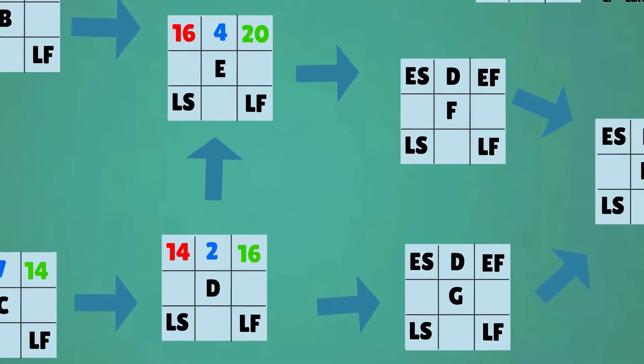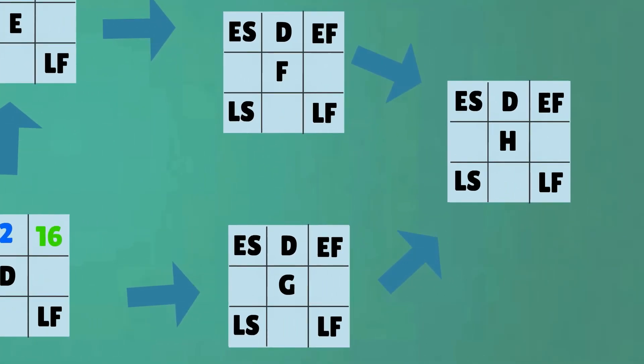This same scenario is applicable for activity H. Activity H is dependent on both activity F and activity G. Therefore activity H has an early start of week 25.